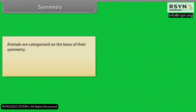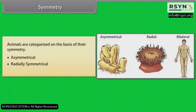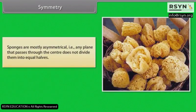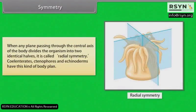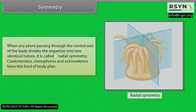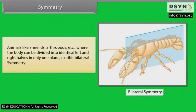Animals are categorized on the basis of their symmetry. They are asymmetrical, radially symmetrical, or bilaterally symmetrical. Sponges are mostly asymmetrical — any plane that passes through the center does not divide them into equal halves. When any plane passing through the central axis of the body divides the organism into two identical halves, it is called radial symmetry. Coelenterates, ctenophores and echinoderms have this kind of body plan. Animals like annelids, arthropods, etc., where the body can be divided into identical left and right halves in only one plane, exhibit bilateral symmetry.